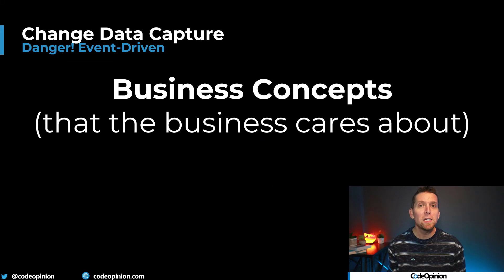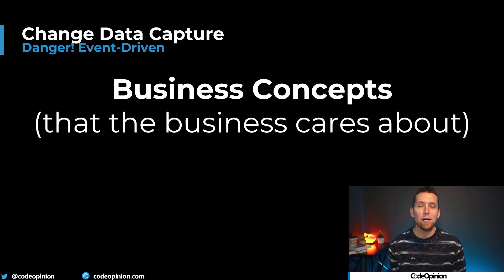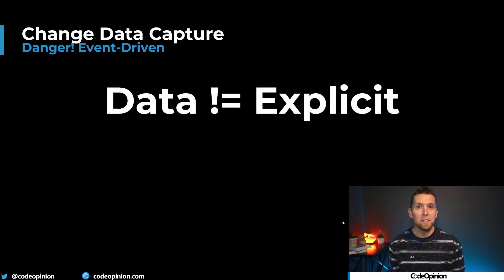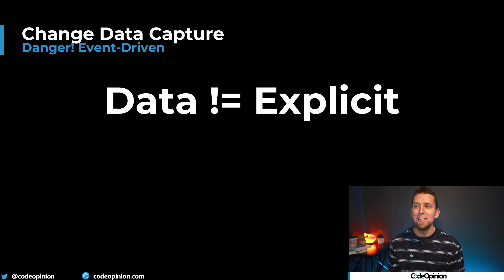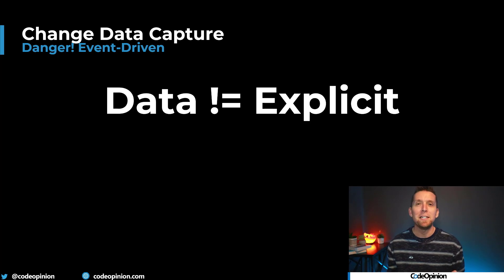A meaningful event, especially in the context of event-driven architecture, means distributing and publishing business concepts — things that have actually occurred that the business actually cares about. Now, depending on the type of data, with CDC and a translation process, is it really explicit what actually happened in terms of a business concept? Sometimes that can be really difficult to infer. If you can't infer it, what will likely happen is you'll end up publishing more CRUD-type events — saying this property changed or this entity changed — rather than more explicit business concepts.